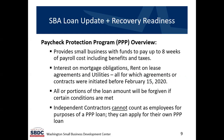The overview of the Paycheck Protection Program is that it provides up to eight weeks of payroll costs including benefits and taxes. You can also use it to make mortgage payments, rent payments on lease agreements, or utilities. If it's related to mortgages, it's only the interest portion of the mortgage that these funds can be used for — they won't let you use these funds for the principal portion because that's an asset you're actually purchasing. These obligations had to be in place prior to February 15th of this year. All of the loan or a portion of it can be forgiven if certain conditions are met.